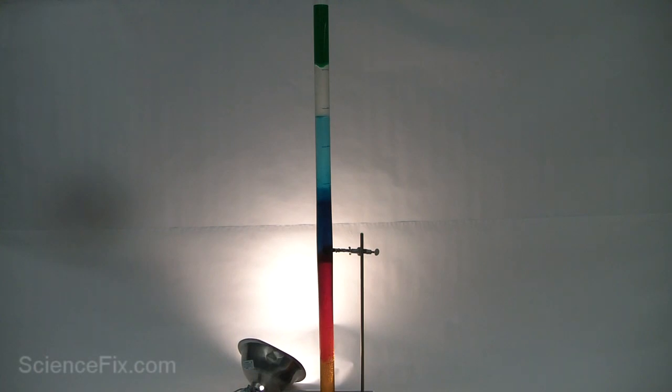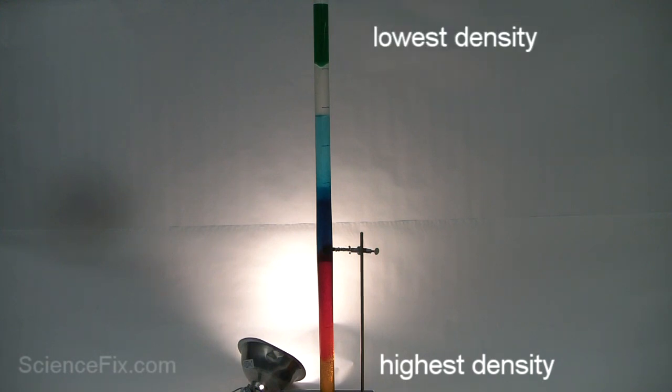In the long slender tube are six different liquids of differing densities. The one at the bottom has the highest density, and the one at the top has the lowest density.